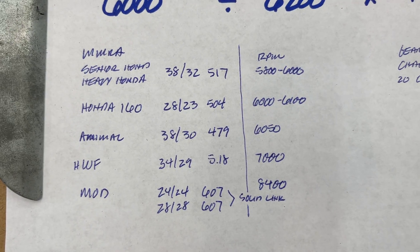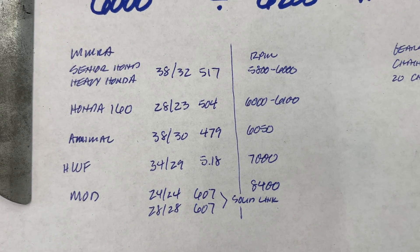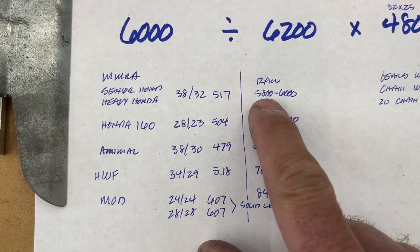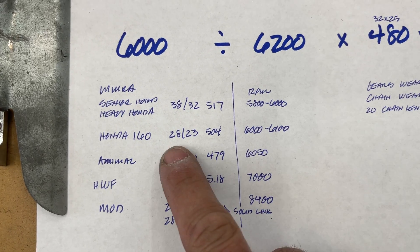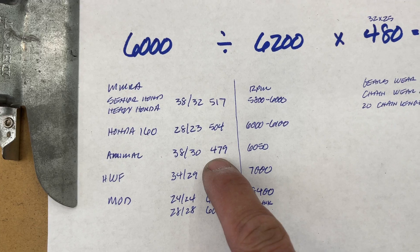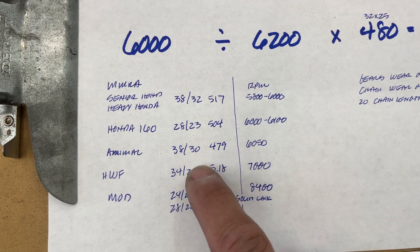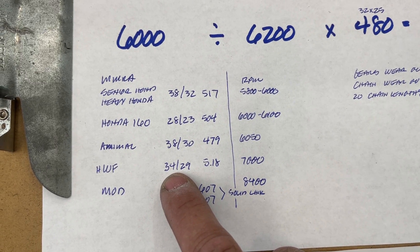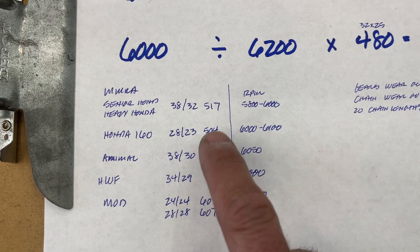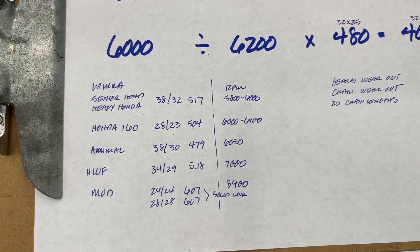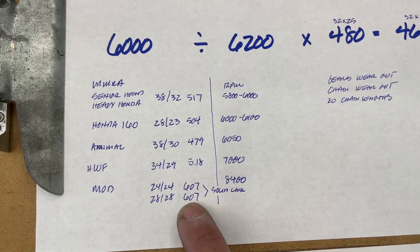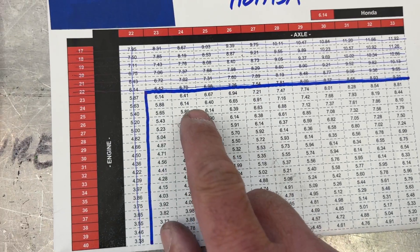Here are some examples from the Waterford track — these were our favorite gears after trying all kinds of combinations. Senior Honda: we liked 38-32, which was 517, at 5,800 to 6,000 RPM for the UT2/UT3. The 160: we liked the 504 at 6,000 to 6,100. Animal: we never changed this gear all year long — ran a 479, 38-30 the whole time. Heavy World Formula: that RPM is 7,000, so we ran a 518, which is interesting because Senior Honda was at 517 — a lot of times there's a lot of correlation. And then the mod is the easiest one of all: it's always 607. 24-24 equals 607, 28-28 is 607, 29-29 is 607.